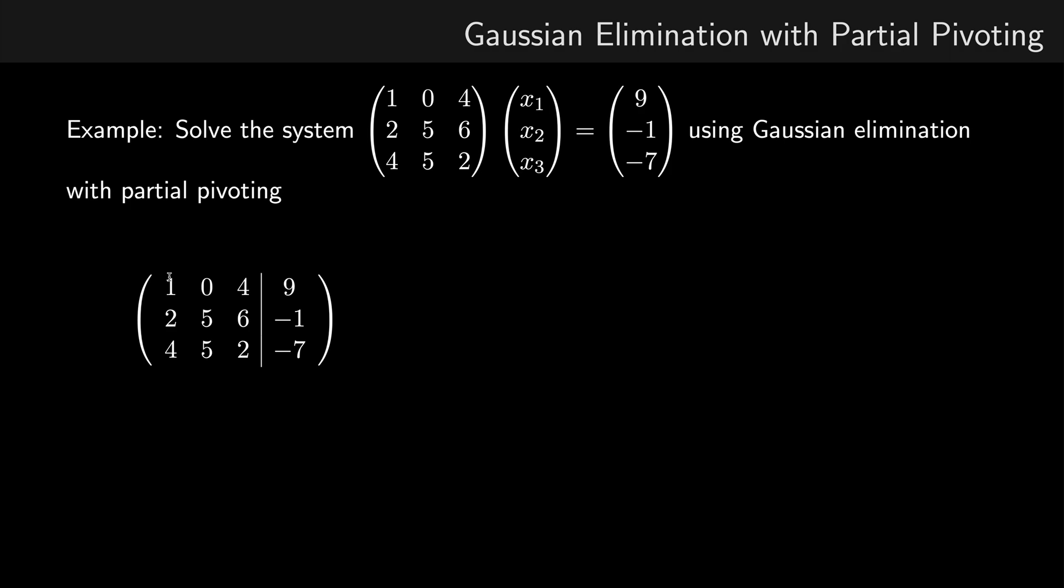Now, our pivot element has a value of 1. And if we look at the values of the elements beneath it, they are 2 and 4. So now we want the pivot element to be the largest value out of the elements beneath it. So here, 4 is clearly larger than 1. So the first thing we do is we perform a row swap, and we swap row 1 and row 3 around.